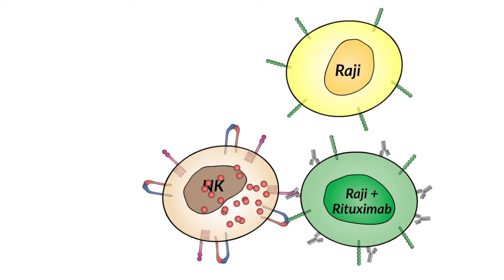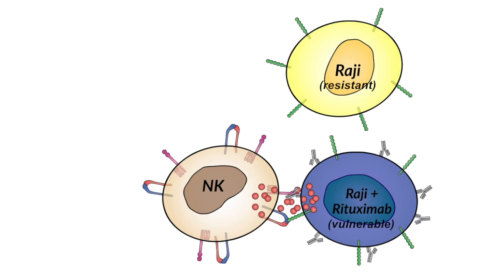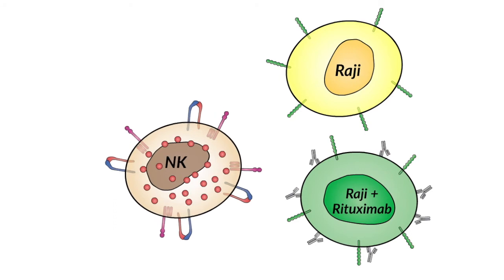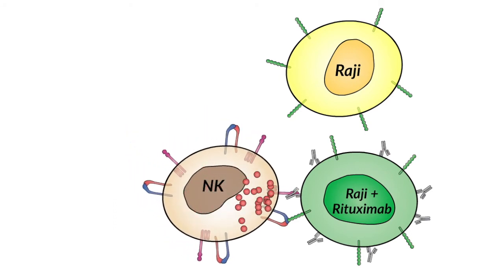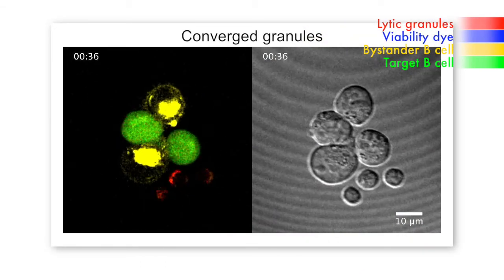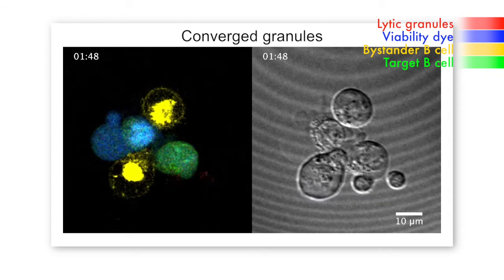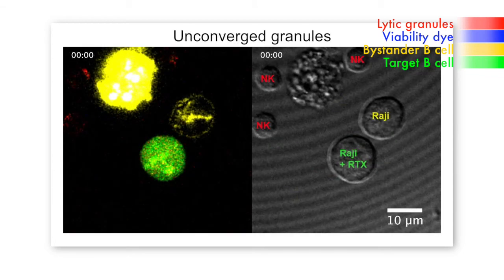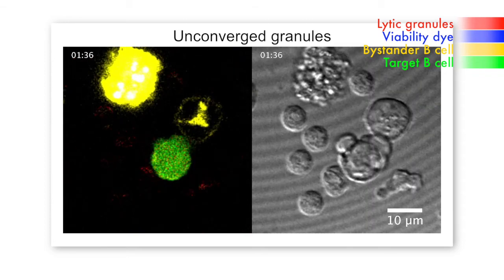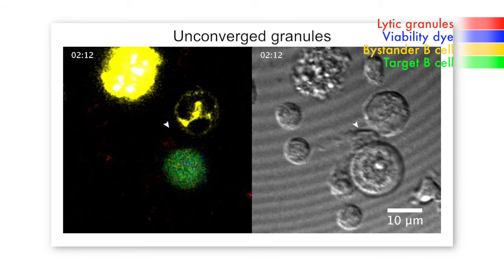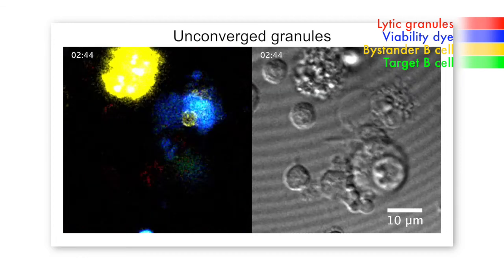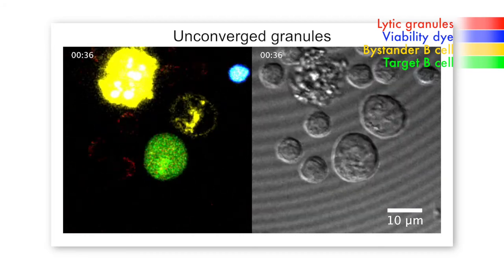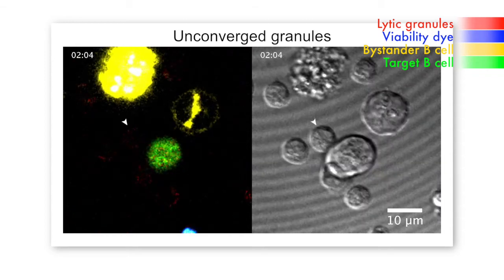Schuertau then tested the importance of granule convergence in a more physiologically relevant setting, examining NK cell activity towards transformed B cells that are resistant to NK cell killing unless coated with rituximab — a therapeutic monoclonal antibody that activates the CD16 receptor on the NK cell surface. The transformed B cell also has the ligand for the LFA1 integrin, creating a situation with both convergence and degranulation. When the convergence signal was blocked using a blocking antibody to LFA1 integrin, the granules did not converge and dispersed degranulation occurred, resulting in killing of both rituximab-coated cells and surrounding cells not coated with rituximab.